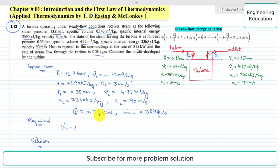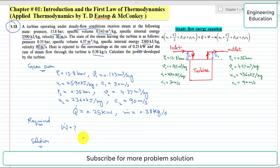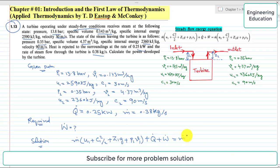The form of the steady flow energy equation we use is: m_dot × (u1 + c1²/2 + z1·g + p1·v1) + q_dot + w_dot = m_dot × (u2 + c2²/2 + z2·g + p2·v2). Since z1 equals z2, the elevation terms cancel.